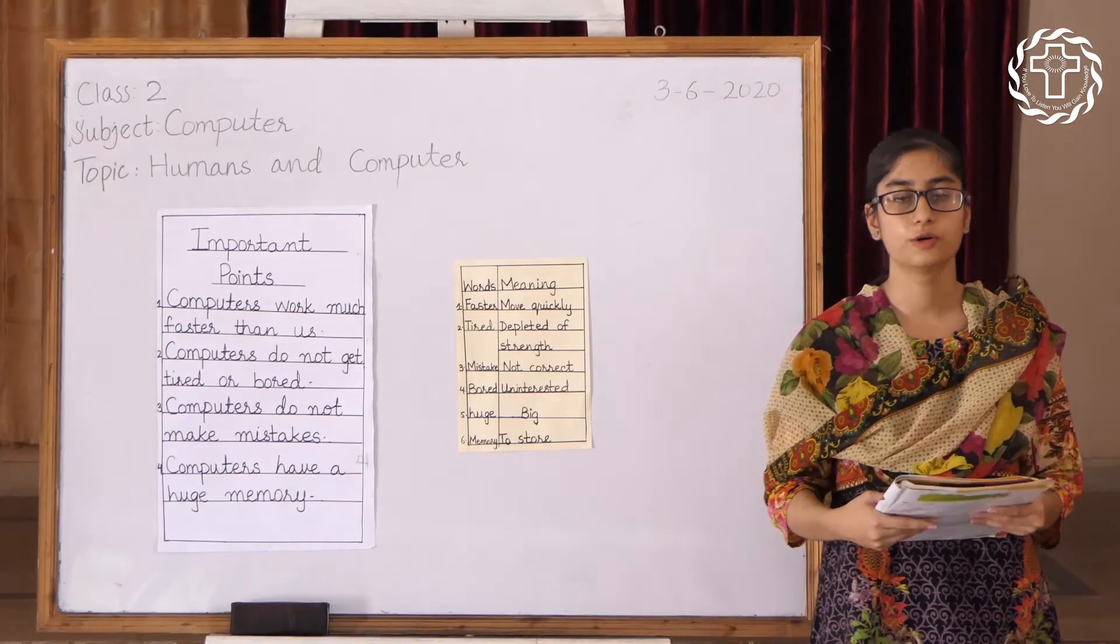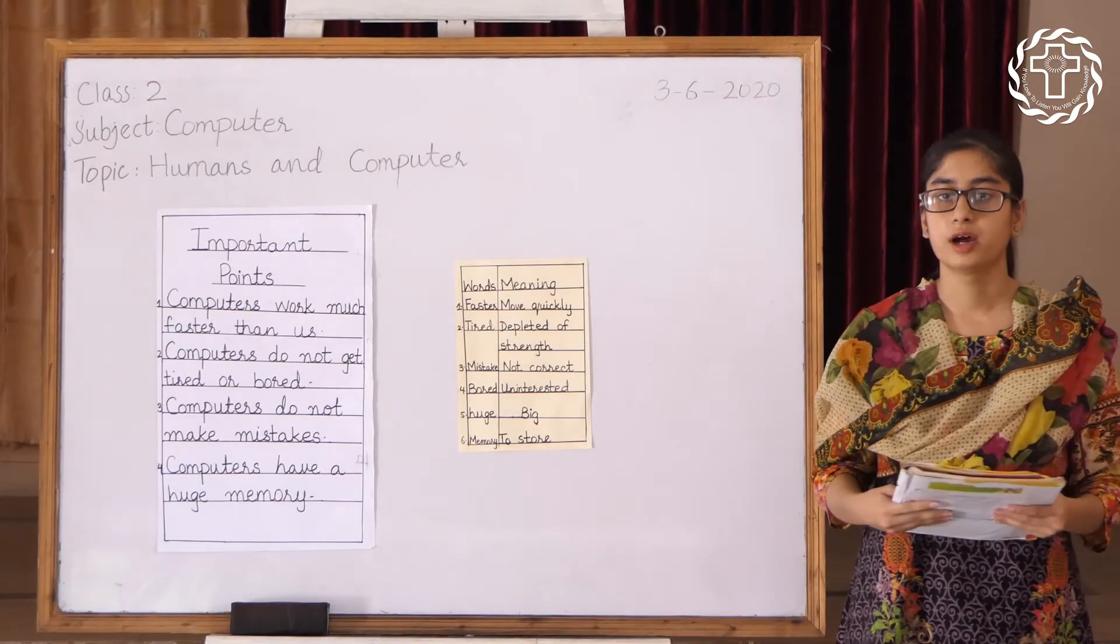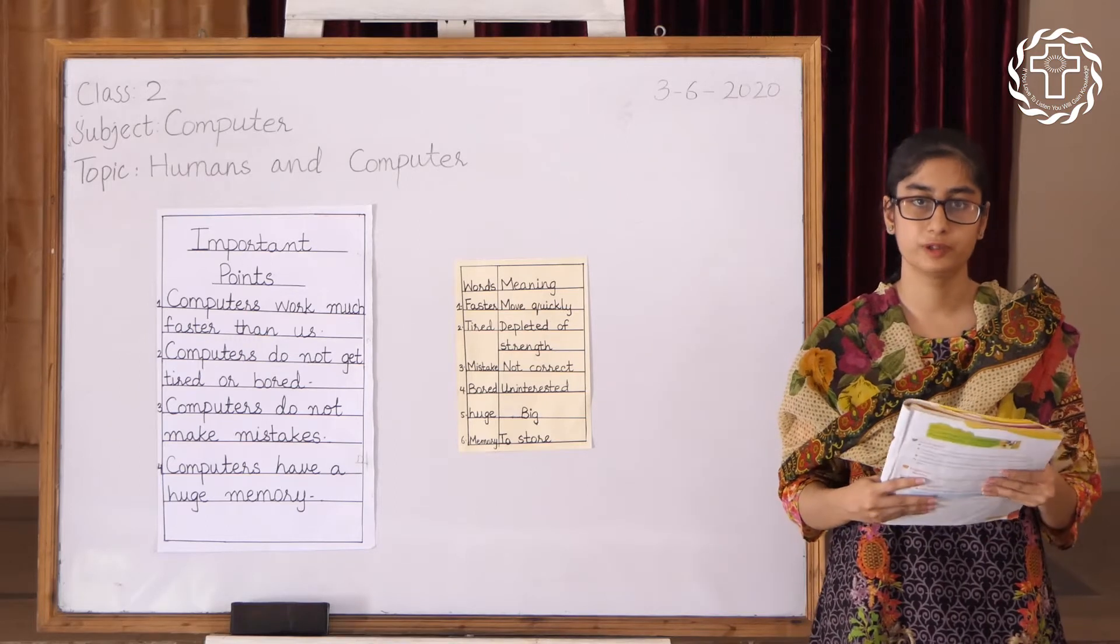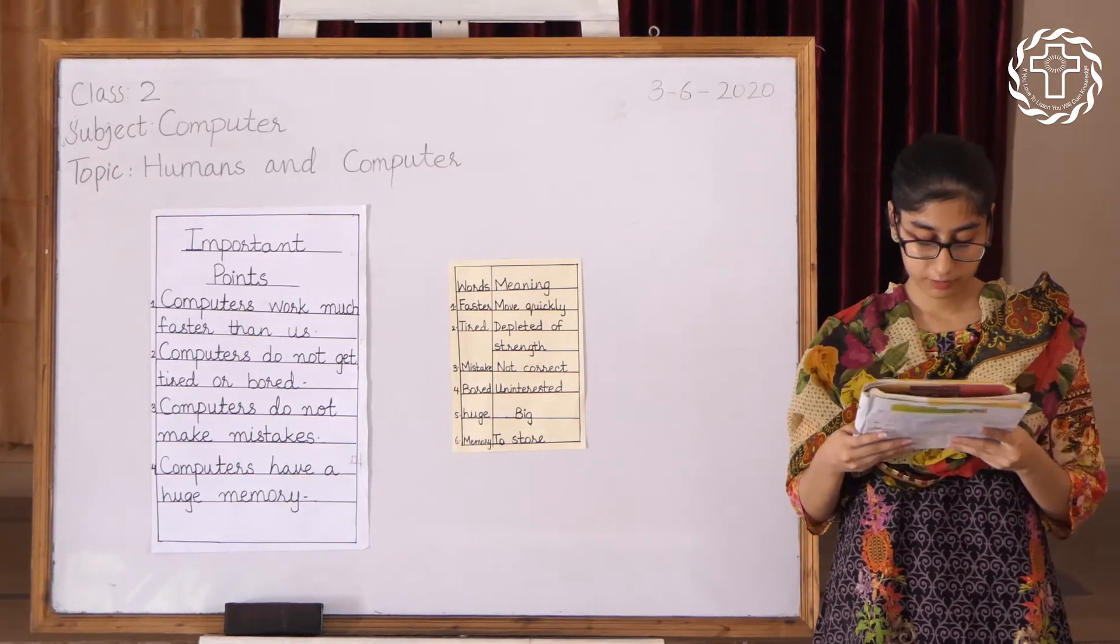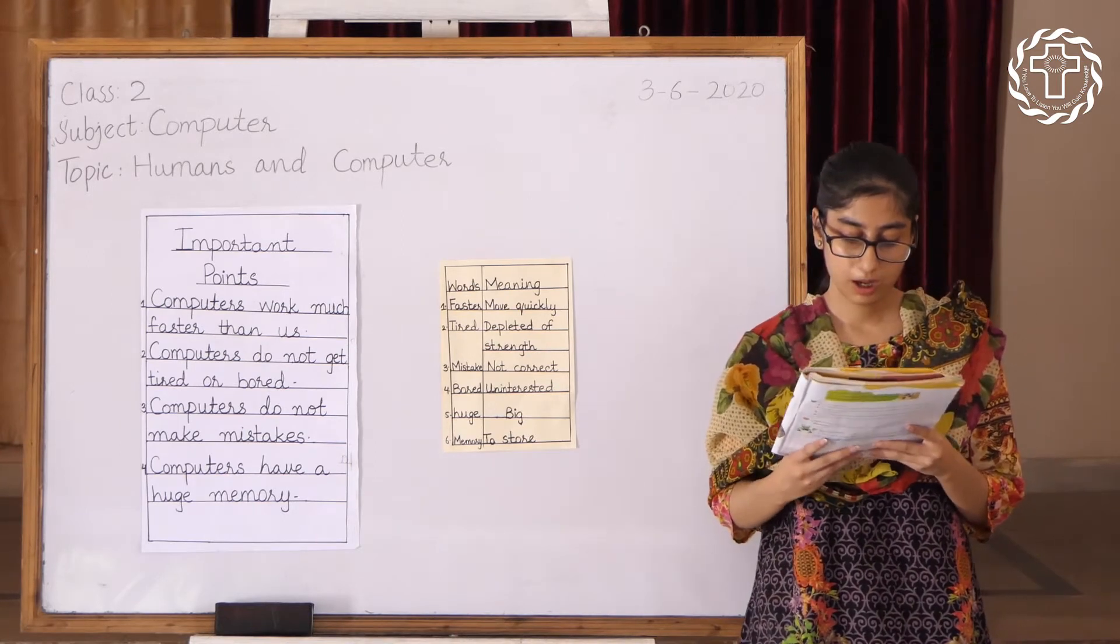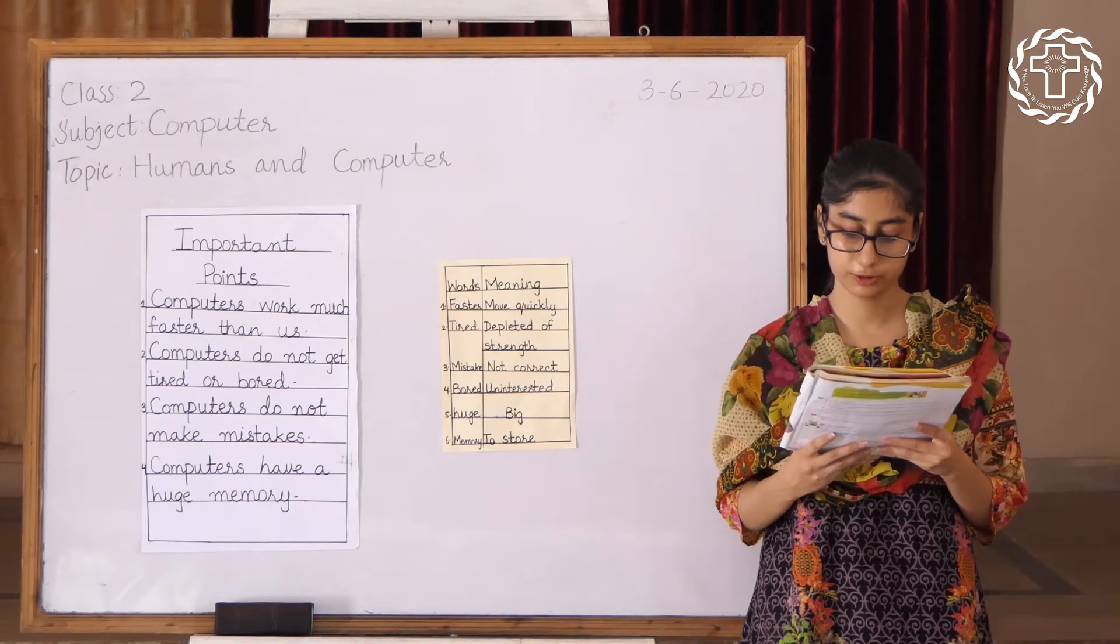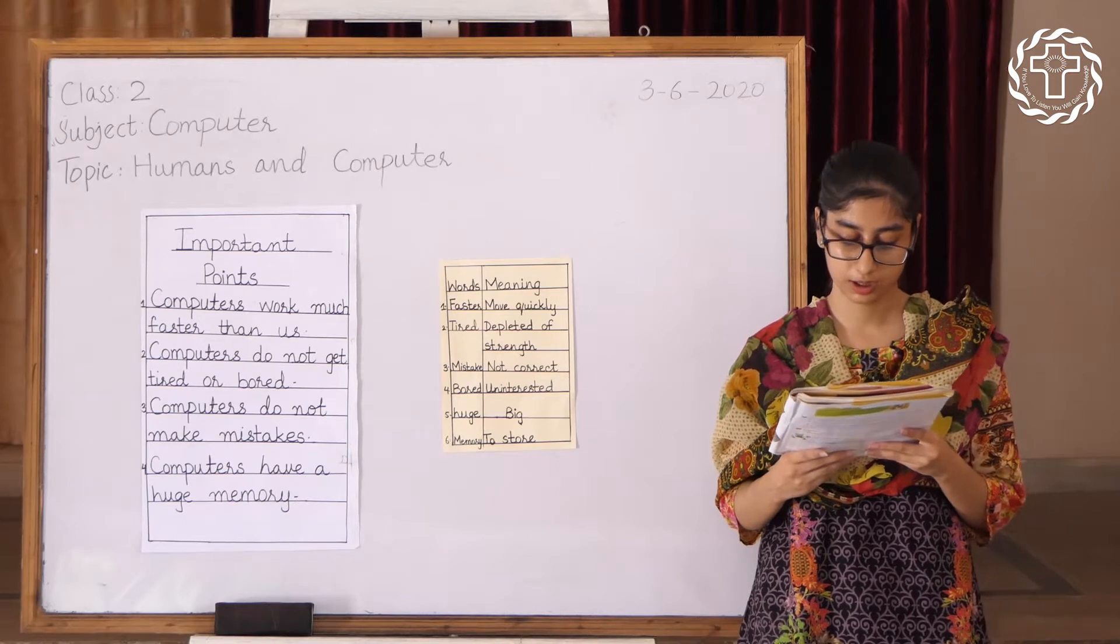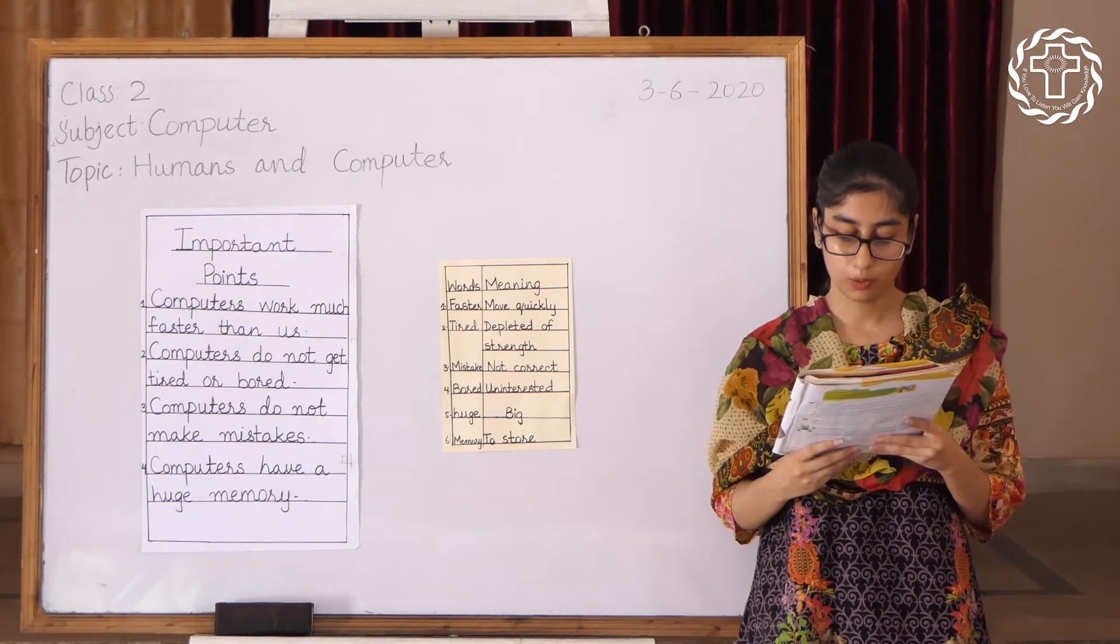Good morning class, hope you are fine. Today our topic is Humans and Computers on page number six. I am going to read the first paragraph. Computers are different from humans in the following ways. Number one: computers work much faster than us.